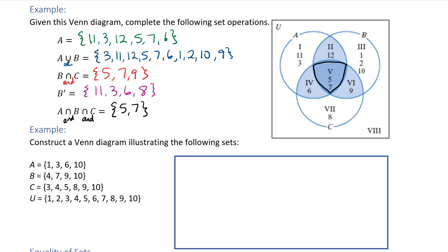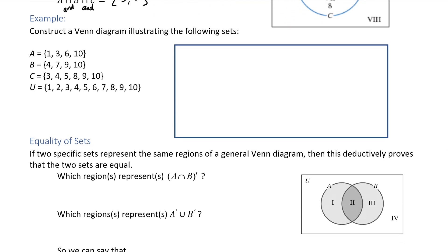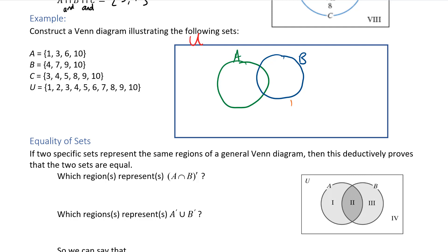Next we're going to construct our own Venn diagram. When constructing a Venn diagram it is important to start in the innermost region. I have a universal set labeled on the outside, a circle for set A, another circle for set B that overlaps it, and another circle for set C that overlaps both.